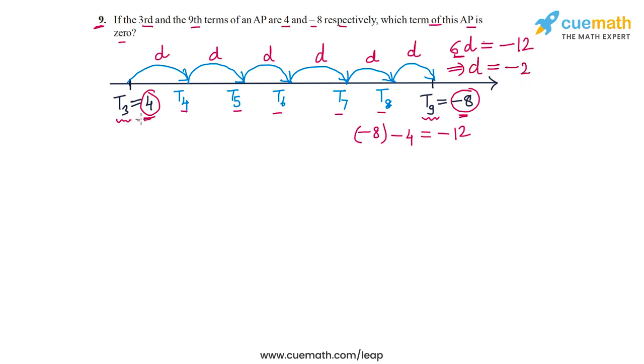This means that because T3 is 4, then T4 will be 2 and T5 will be 0. So the term of the AP which is zero is T5.